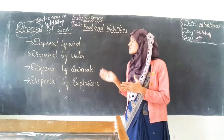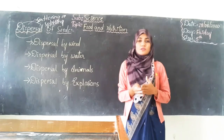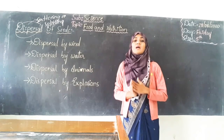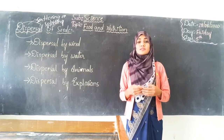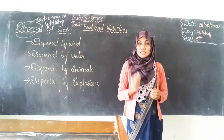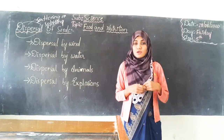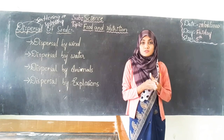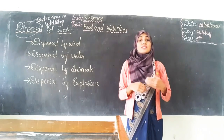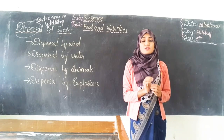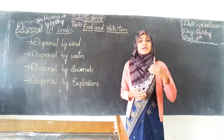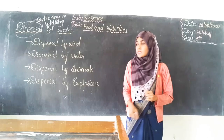Now, what is the dispersal of seeds? We know there are so many kinds of trees and plants in the whole world, but we are not planting them. Then how are the plants and trees growing on their own? Who sowed the seeds of those plants? We human beings are not sowing those seeds. So they will be sown naturally by nature. In what ways does nature help plants in sowing their seeds? Let us see.